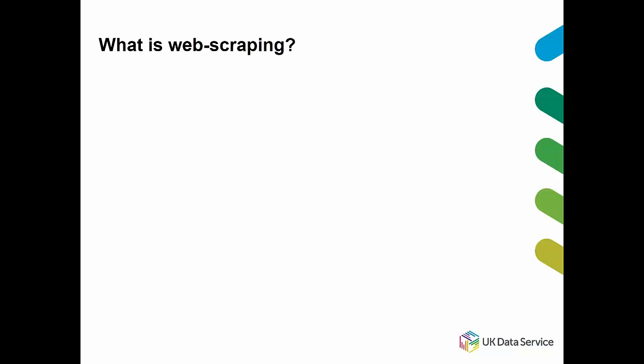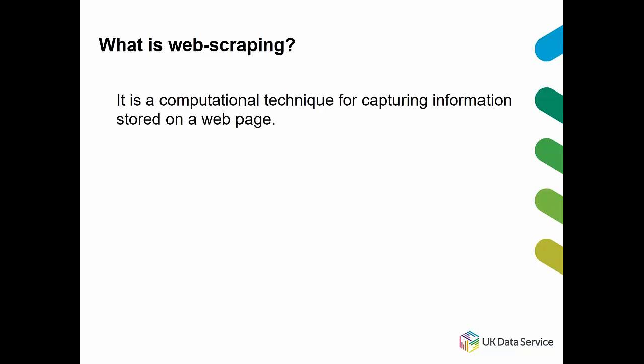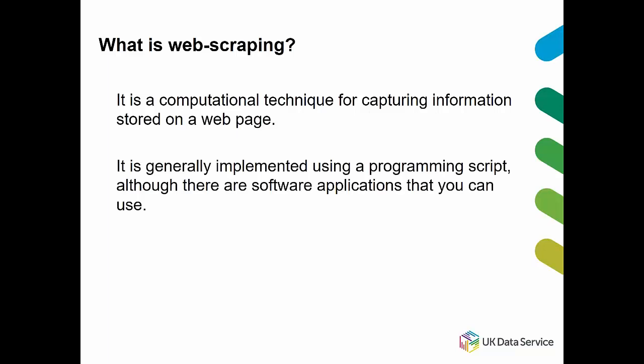So what is web scraping? It's a computational technique for capturing information stored on a web page. 'Computational' is the key word here because it is possible to manually collect data from a web page — you can highlight words, paragraphs, right-click on an image and save to your machine. However, performing this task manually carries some considerable disadvantages, as I'll show you in our specific example.